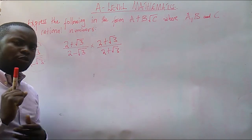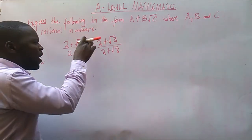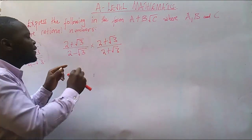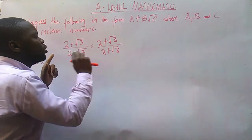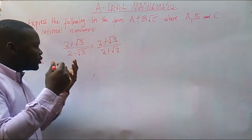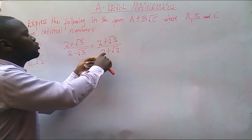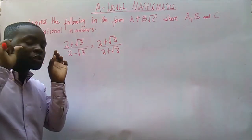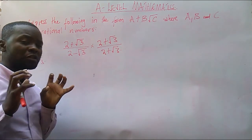The second thing which you must know is, what you are introducing here must make a difference of two squares on the denominators of these two fractions. As you can see, two minus root 3 and two plus root 3, this is a difference of two squares. Very simple concept there.